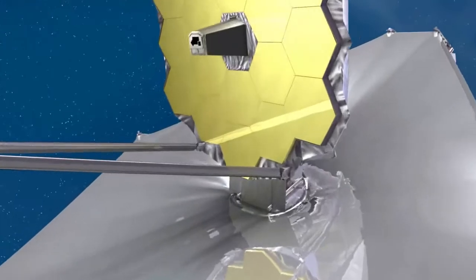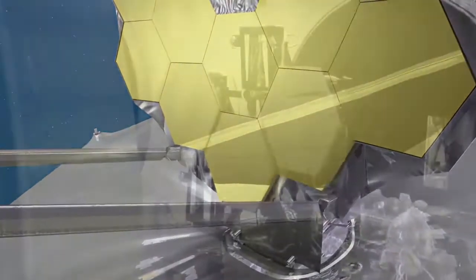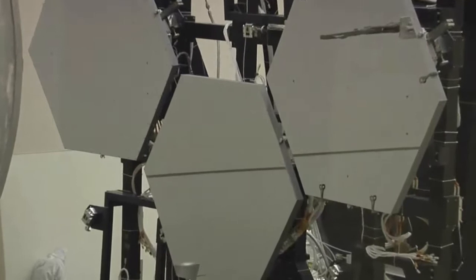Webb's primary mirror will consist of 18 of these beryllium segments, which will be cycled through the thermal chamber twice each.